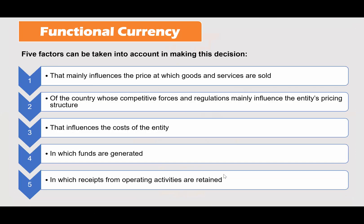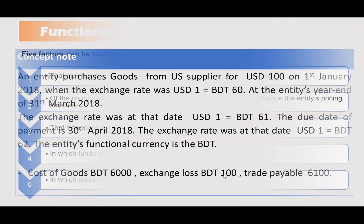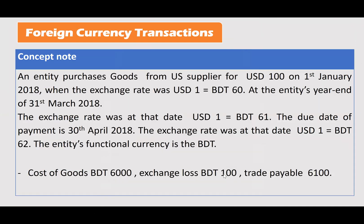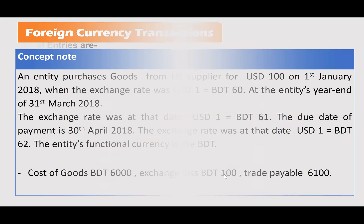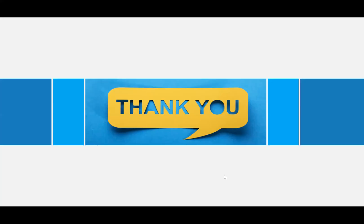These are the key points for the first part of this presentation. In the next session, we will look at Bangladesh context bank transactions, journal entries, and how foreign exchange loss and gain are recognised. As the dollar fluctuates continuously, we will also discuss provisions. I hope this has been helpful for you.